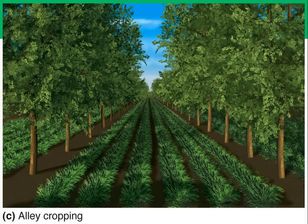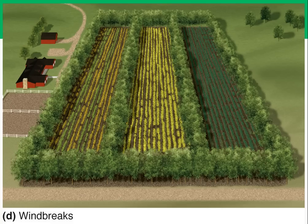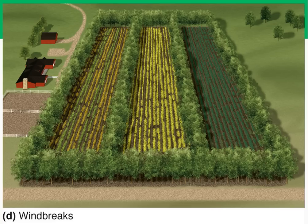A similar practice is windbreaks, also called a shelter belt, where the entire field is surrounded by trees rather than just rows within it. This helps reduce wind erosion, retains soil moisture, supplies wood, and increases crop productivity by about 5–10%. Windbreaks also provide habitats for birds and pest-eating, pollinating insects, which can help control pest populations and reduce the need for pesticides.